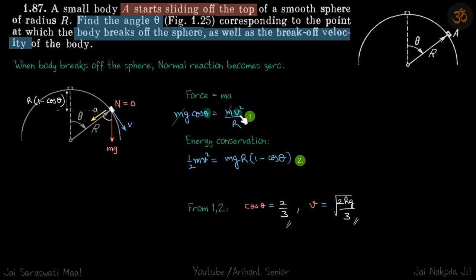We still have two variables, so we need the velocity also if we need to find the angle theta. So velocity we can find from energy conservation. So how much has it fallen down? It was here originally and it has come down by a distance of r minus r cos theta, which is r into 1 minus cos theta.